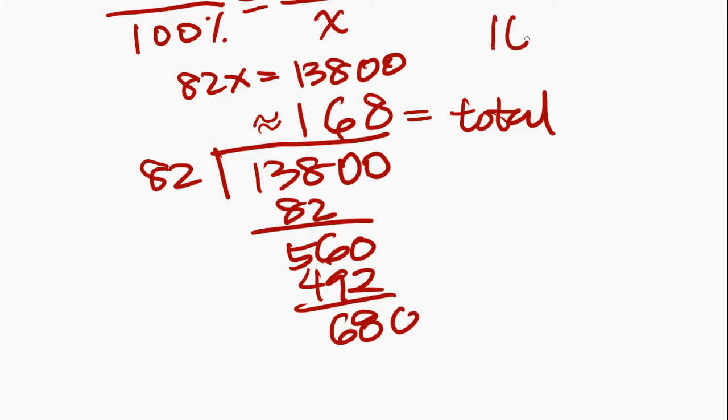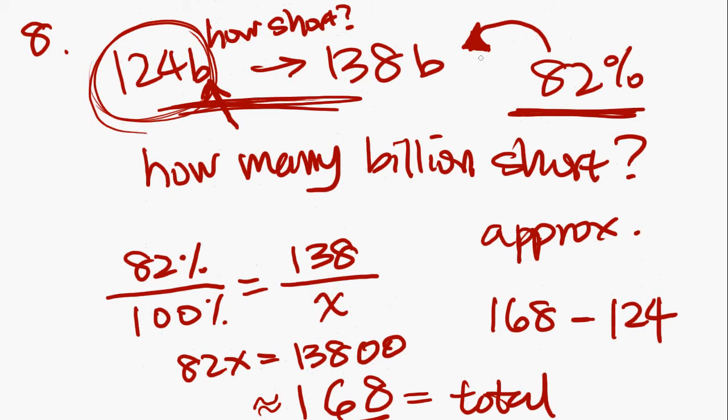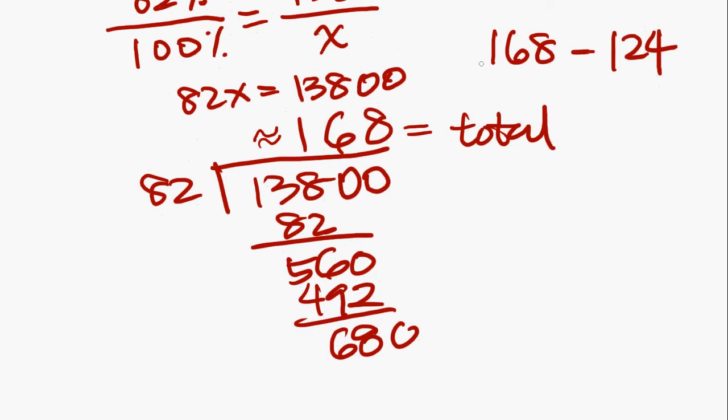And we take this number here and we subtract it with the original amount, which was 124 billion. Yeah? Remember? 124 billion. That's what we're subtracting here. 168 minus 124 will get us our answer. 168, 124, equals 44.